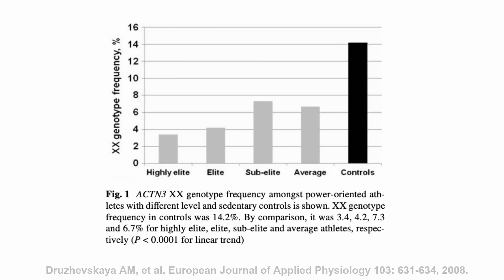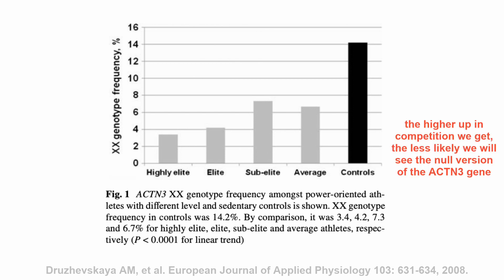I've got yet another diagram for you — that's just going to be the theme of this video. In this one, we can see that the diagram compares control participants who are not particularly active with power-oriented athletes at different levels of competition. The higher up we get in terms of competition, the less likely it is that we're going to see that X allele — the one associated with endurance capacity, smaller type 2 muscle fiber size, and less muscle strength.